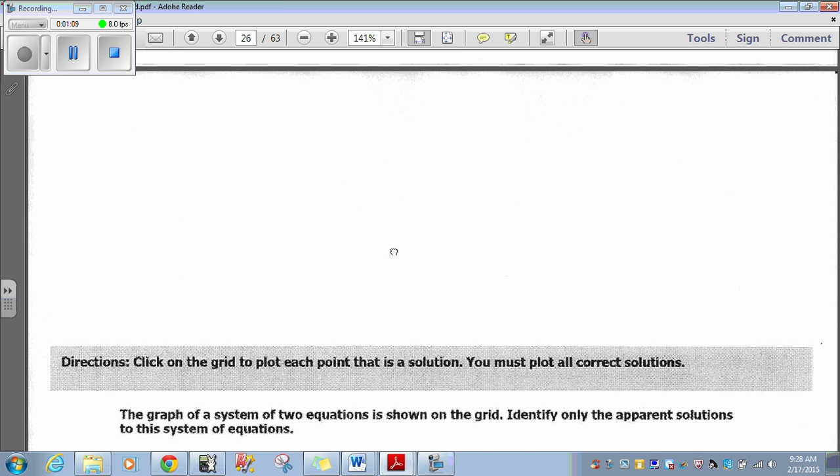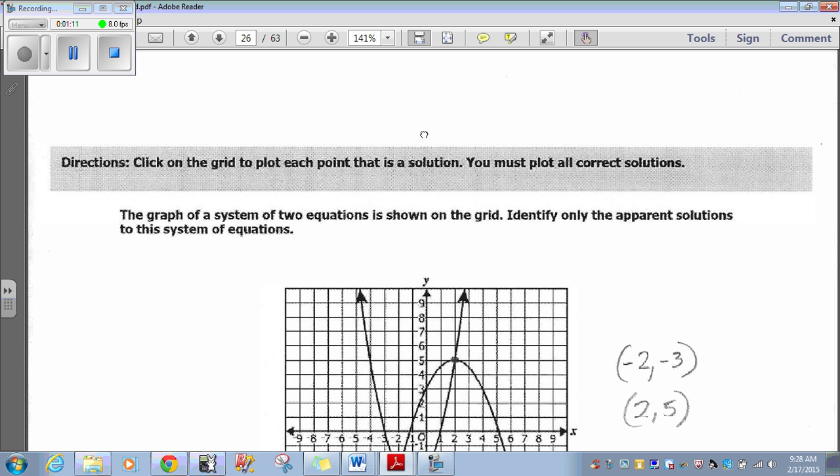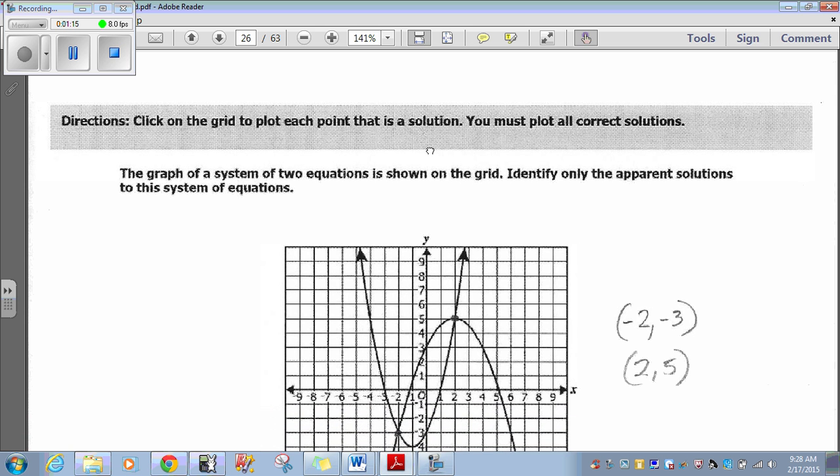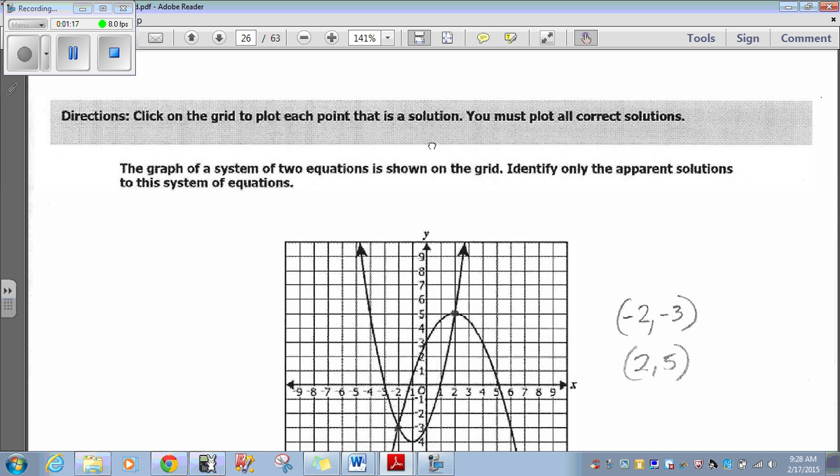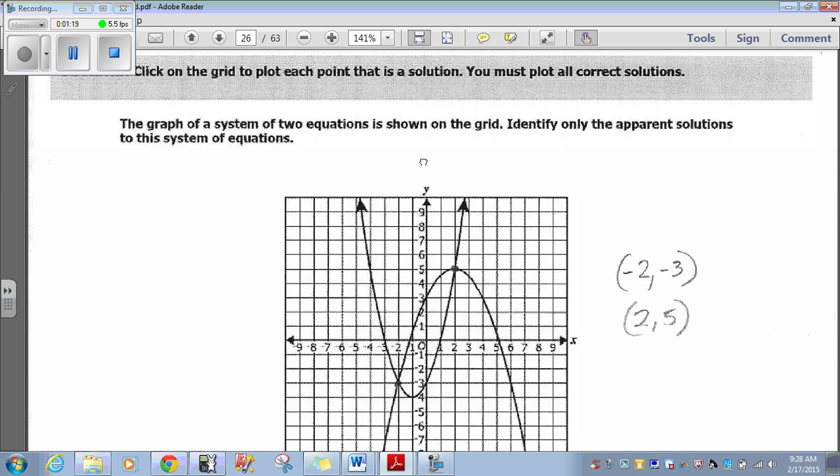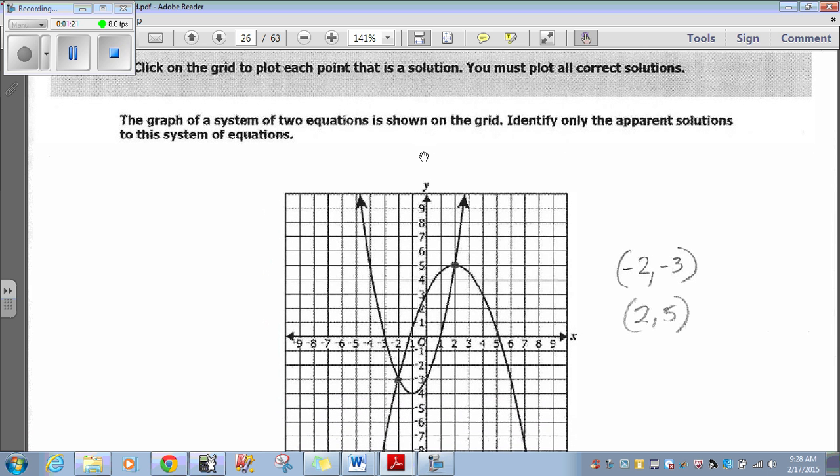Now, question 22. Click on the grid to plot each point that is a solution. You must plot all correct solutions. Now, all correct solutions are going to be the points where those two parabolas intersect. And it looks like they intersect right there. And that's what? 2 comma 5.